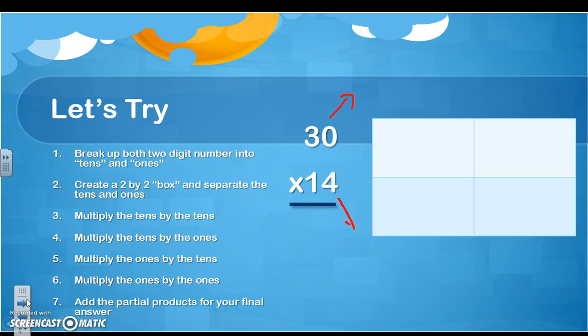30 times 14. So again, I'm going to break up these numbers into 30 and 0, 10 and 4. Right? We broke it up into 10s and 1s. Here's my box. It's already made for me.